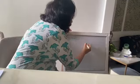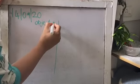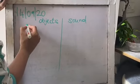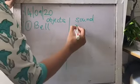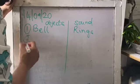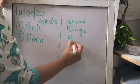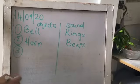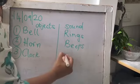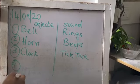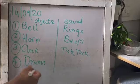We will write on a piece of paper in your English book. You will make two columns — Objects and Sound. First object: bell — rings. Second: horn — beeps. Third: clock — tick-tock. Fourth: drums — beats.